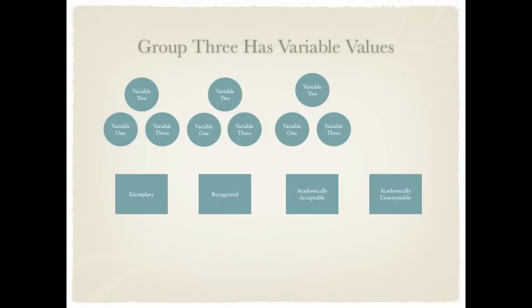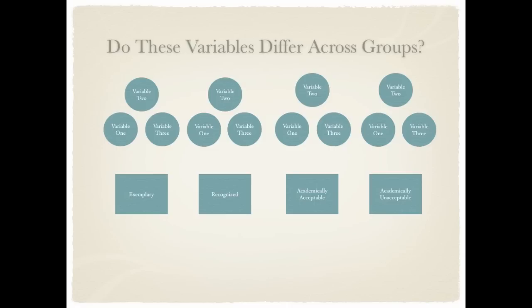The Academically Acceptable will have the same, as will the Academically Unacceptable. What I want you to notice is that each of the four groups, which are broken out by district rating, will have variable values which can be compared. The purpose of MANOVA is to see if these variables—these groups of values under those variables—differ across the four different groups.